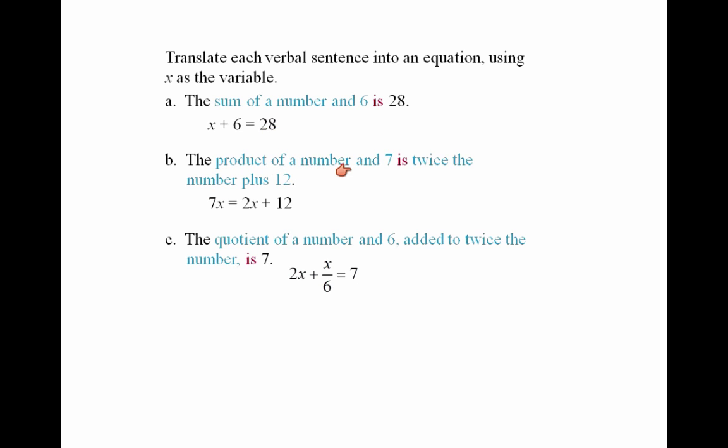The product of a number and 7 is twice the number plus 12. So this is 7x equals 2x plus 12.